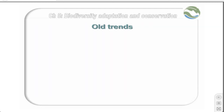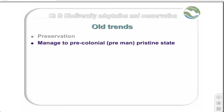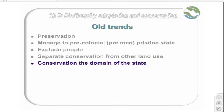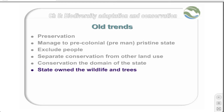The following are some of the trends seen in old-style conservation. Firstly, there was a preservationist attitude — that conservation areas were meant to be preserved and not used, and managed towards some form of pre-colonial, pre-man pristine state. Management also normally excluded people and separated conservation from other land uses, often putting up large fences between them. Conservation was primarily the domain of the state, which owned the wildlife and the trees both within and outside conservation areas.